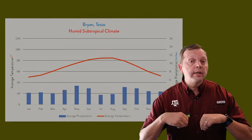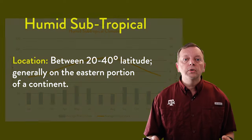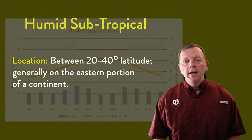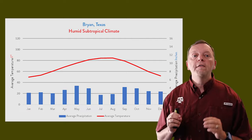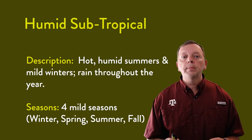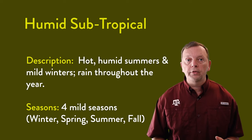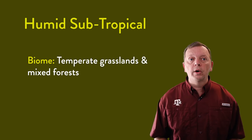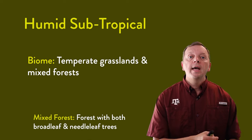The humid subtropical climate is actually the climate found here in Bryan, Texas. It's usually found as close as 20 degrees from the equator and extends as far as 40 degrees of latitude. Looking at its climate graph, we can see four seasons, with temperatures being cool in winter and warmer in summer, and precipitation throughout the year. A humid subtropical climate supports temperate grasslands and mixed forests — meaning forests with both broadleaf and needleleaf trees.